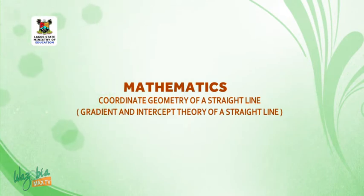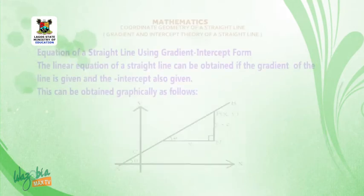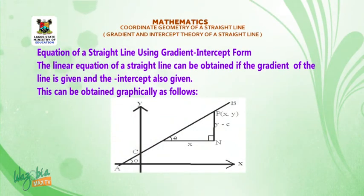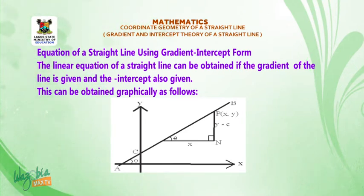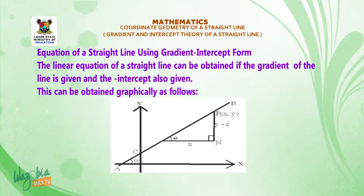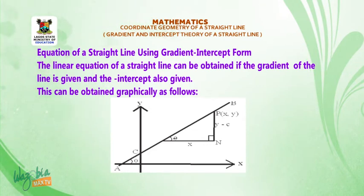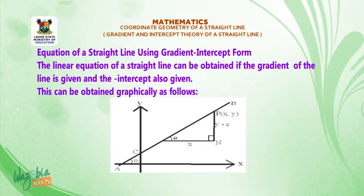Welcome back class. Now we look at the equation of a straight line using gradient-intercept form. The linear equation of a straight line can be obtained if the gradient m of the line is given and the y-intercept c is also given. This can be obtained graphically as follows.